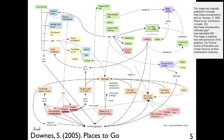Let's look at a course that was designed for the program leading to the Certificate in Adult and Continuing Education at the University of Manitoba. The course has been designed to integrate the newest learning principles in Web 2.0 technologies. This is an image taken from the Places to Go article written by Stephen Downes in 2005.